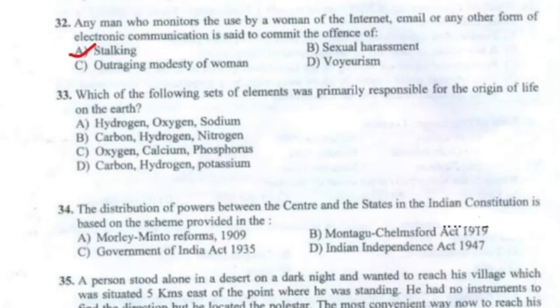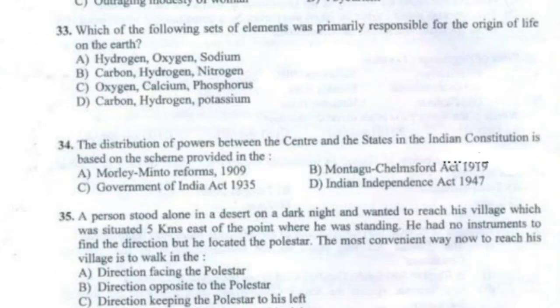Question 33: Which of the following sets of elements was primarily responsible for the origin of life on Earth? The correct answer is Option B — Carbon, Hydrogen and Nitrogen.